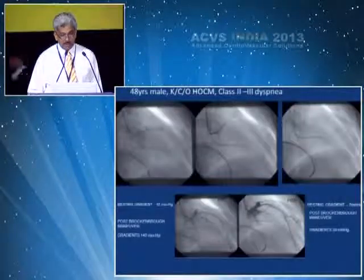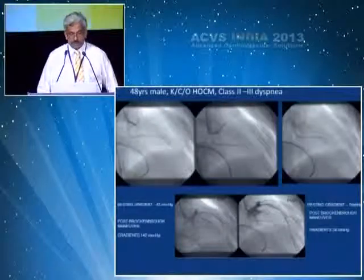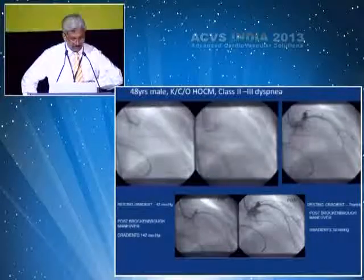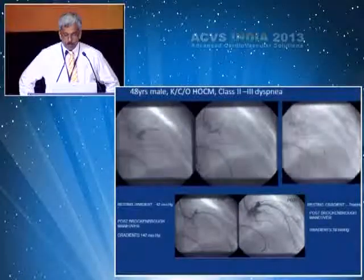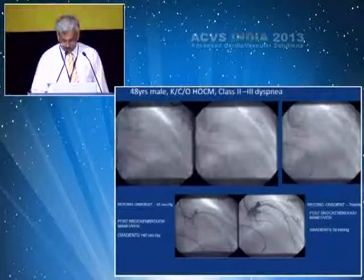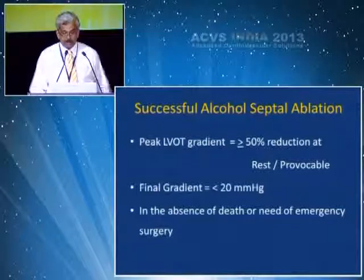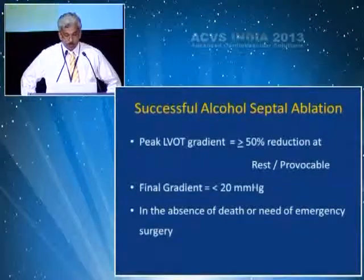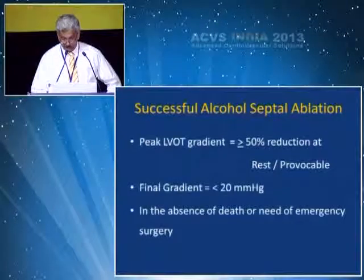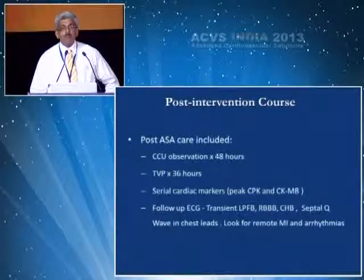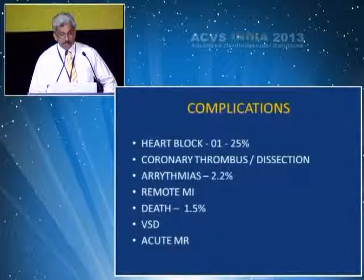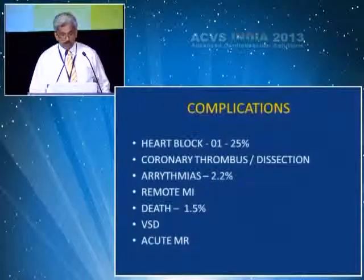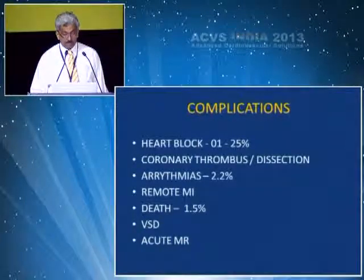The post-procedure gradient is down. You can see the procedure with the angiogram, septal artery, and balloon; the septal is closed after the procedure. Resting gradient 42 before, post-Brockenbrough maneuver 142, post-procedure gradient 7 mmHg, and provocable gradient 34 — a successful procedure. A successful alcohol septal ablation is defined as peak LVOT gradient greater than 50 mmHg at rest or provocable, with a final gradient less than 20 mmHg in the absence of death or need for emergency surgery. Keep patients in CCU; a transvenous pacing catheter should be maintained for 36 hours. Serial cardiac markers and ECG should be obtained. Complications include heart block (~10%), coronary thrombus, dissection, arrhythmias; 1% of patients can die during these procedures, and VSD and acute MR can occur.